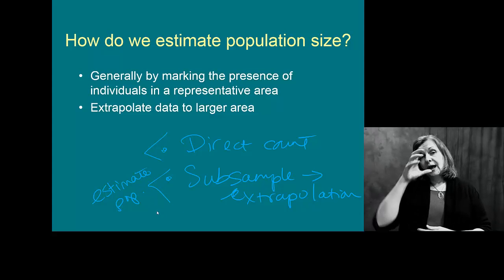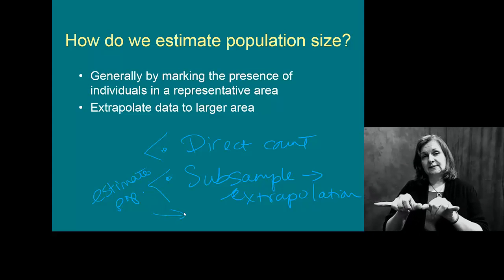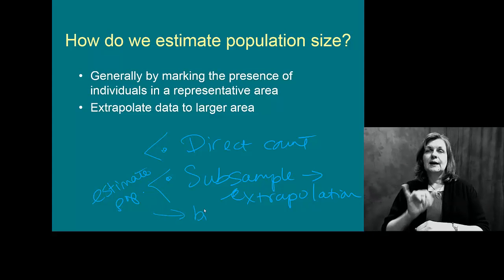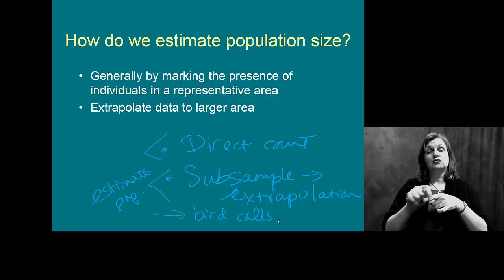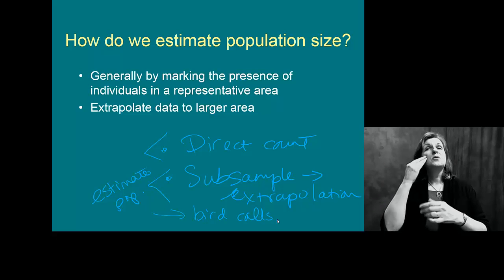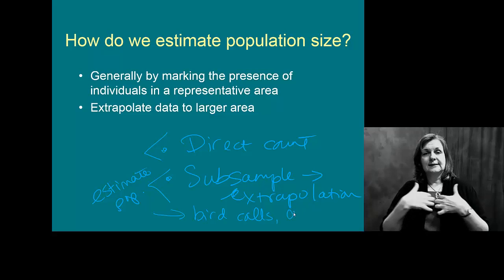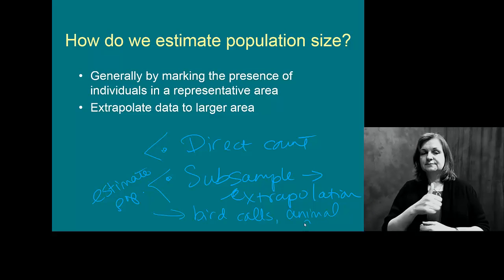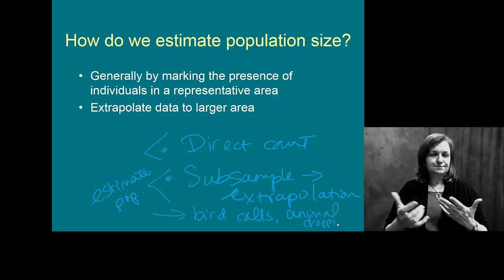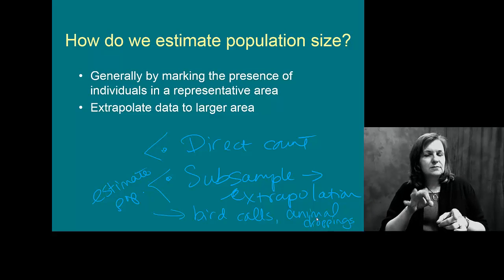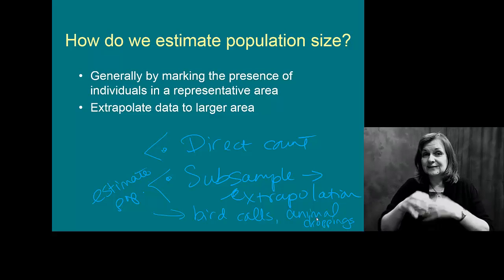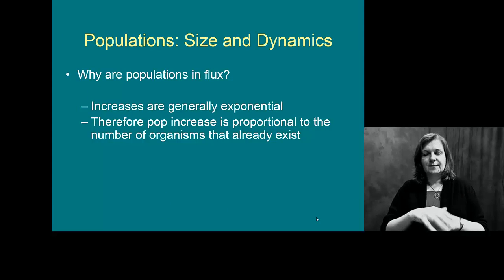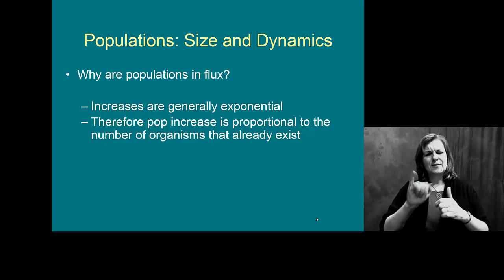For estimating population sizes, often we use things like bird calls. You don't always see all the birds, but trained individuals can estimate the number of birds in an area based on the calls. We also use things like animal droppings — any animals that are skittish, tend to hide from humans, or are nocturnal, we just count droppings to see how many are in an area.